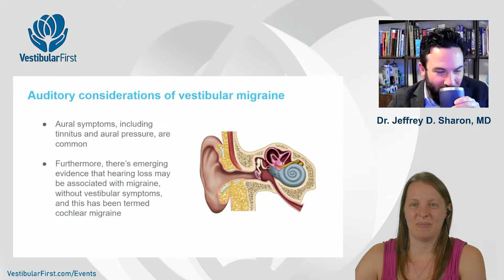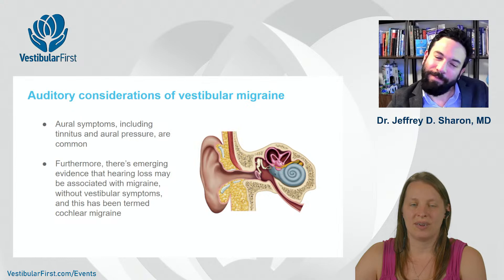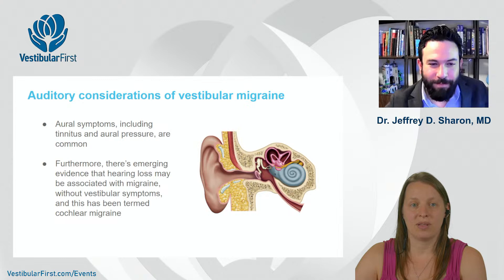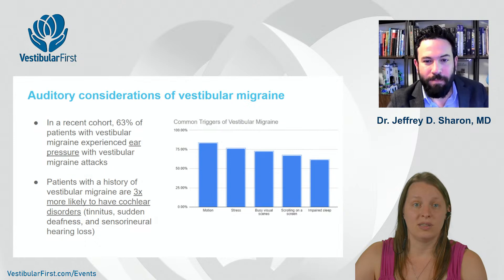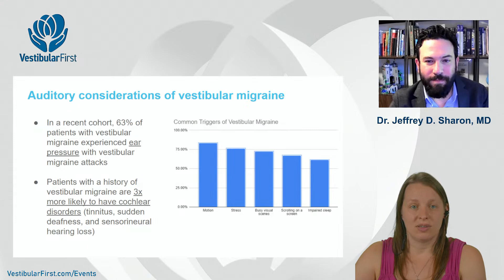We need to dig into the auditory piece because it's an important part of the article and can be tough to understand. Aural symptoms — that's in the ear — include tinnitus or ringing, roaring, and aural pressure, which are common. There's emerging evidence that hearing loss can be associated with migraine, and this is termed cochlear migraine. From the numbers in the paper: 63% of patients with vestibular migraine specifically reported ear pressure during their vestibular migraine attacks. People with a history of vestibular migraine are three times more likely to have cochlear disorders — including tinnitus, sudden deafness, and sensorineural hearing loss.